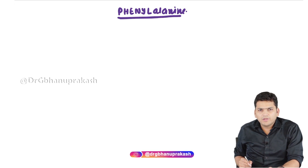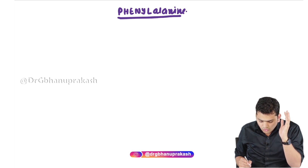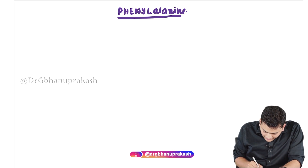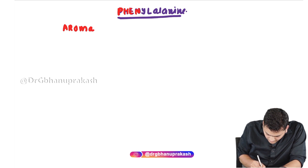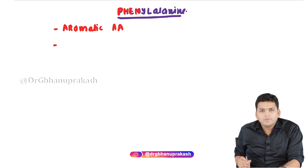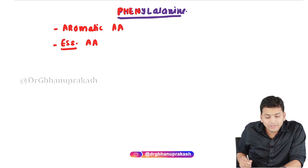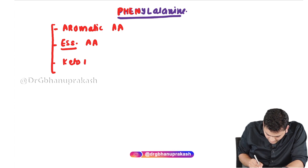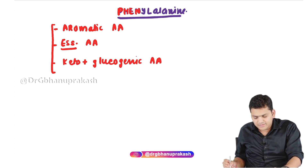Welcome. In this topic we are going to discuss phenylalanine: how phenylalanine is normally metabolized and the associated clinical disorder, phenylketonuria. The basic properties of phenylalanine: as the name suggests, it is an aromatic amino acid. It is an essential amino acid — the mnemonic for essential amino acids we discussed earlier. It is also a keto plus glucogenic amino acid.